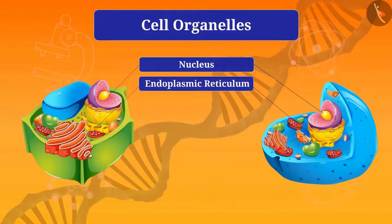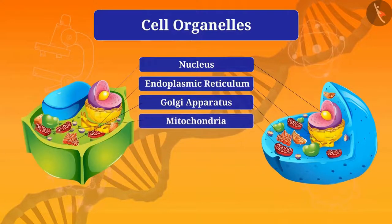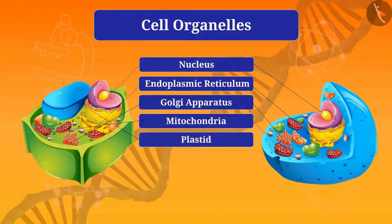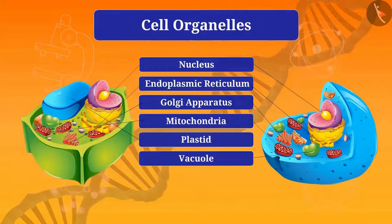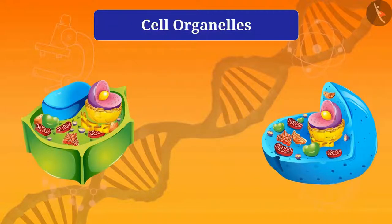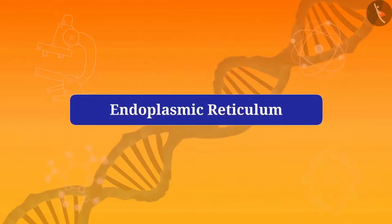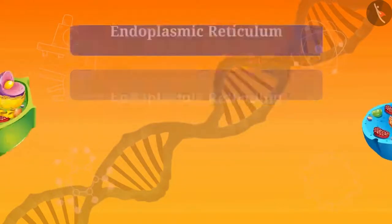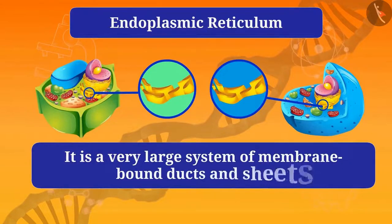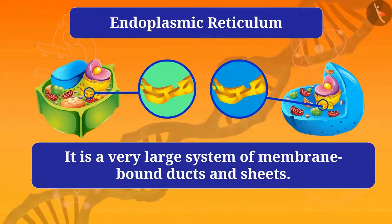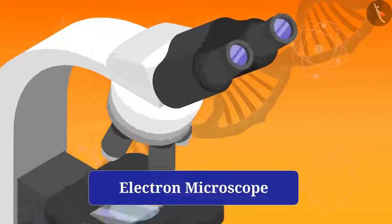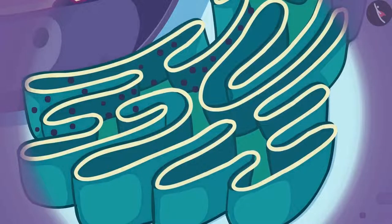These are cell organelles: nucleus, endoplasmic reticulum, Golgi apparatus, mitochondria, plastids, and vacuoles. We have already learned about the nucleus. Now we will learn about the endoplasmic reticulum. It is a very large system of membrane-bound ducts and sheets. Its composition is similar to that of the cell membrane.